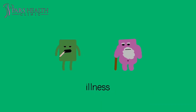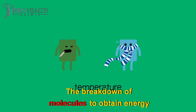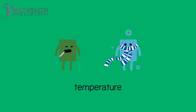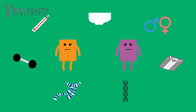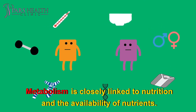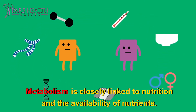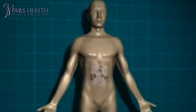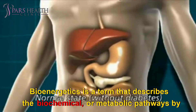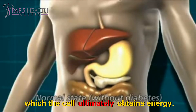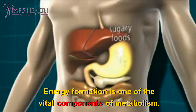Metabolism can be conveniently divided into two categories: catabolism, the breakdown of molecules to obtain energy, and anabolism, the synthesis of all compounds needed by the cells. Metabolism is closely linked to nutrition and the availability of nutrients. Bioenergetics is a term that describes the biochemical or metabolic pathways by which the cell ultimately obtains energy. Energy formation is one of the vital components of metabolism.